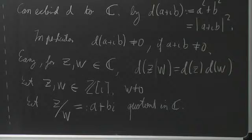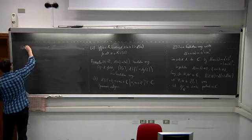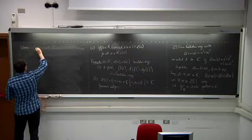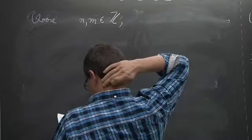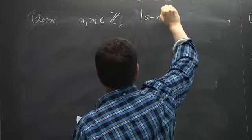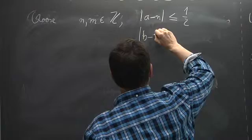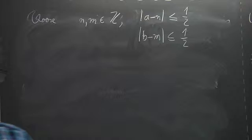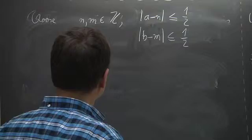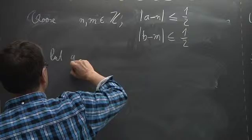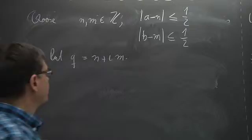We choose n, m in Z such that the absolute value of (a minus n) is at most one-half and the absolute value of (b minus m) is at most one-half — we just choose the nearest integers. Then we set q equal to n plus im, our element in Z[i] to serve as the quotient.